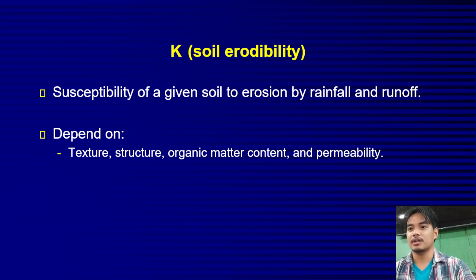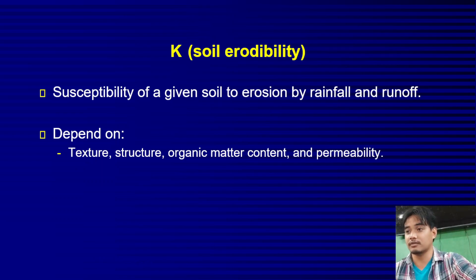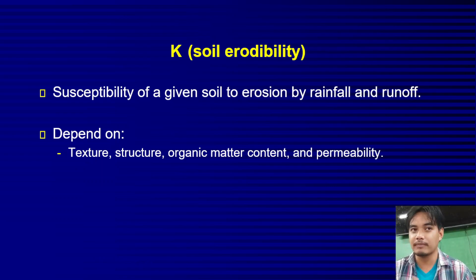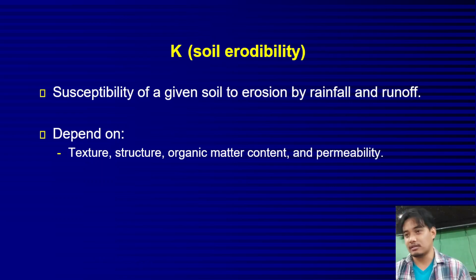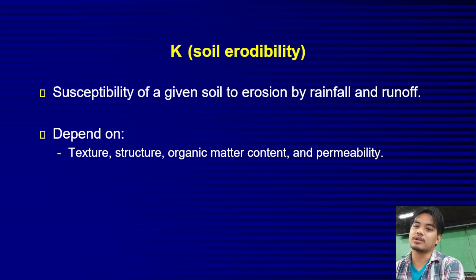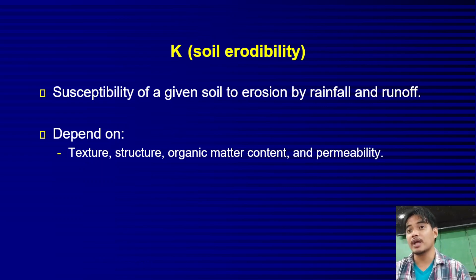Next is the K factor, or erodibility factor. Erodibility is the susceptibility of soil to erosion by rainfall and runoff. Note the difference: rainfall erosivity is the ability of rain to cause erosion, while erodibility is the susceptibility of the soil to being eroded — those are two different things. The erodibility factor is dependent on soil texture, structure, organic matter content, and permeability.